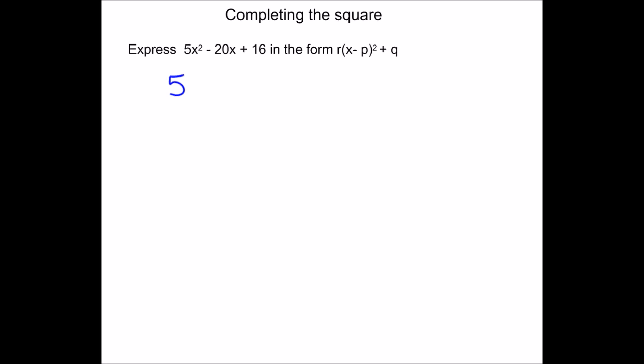Completed square questions can be a little bit harder if there's an x squared coefficient, but we tackle it in the same way. The aim is to make it look like something we know how to deal with — i.e., no number in front of x squared. So the first thing is to factorise out the number in front of x squared using square brackets. Factorising out 5: 5 times x squared gives 5x squared, and 5 times minus 4 gives minus 20, so we have minus 4x inside. The plus 16 is left outside the square brackets, just as before.